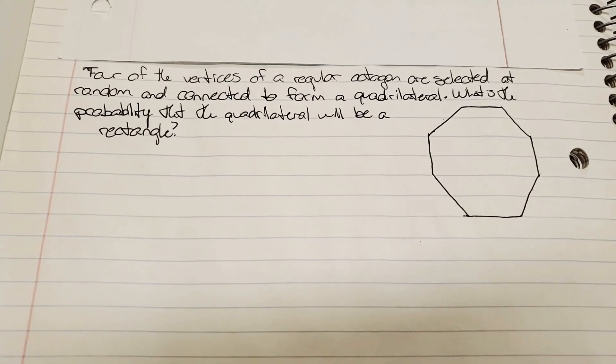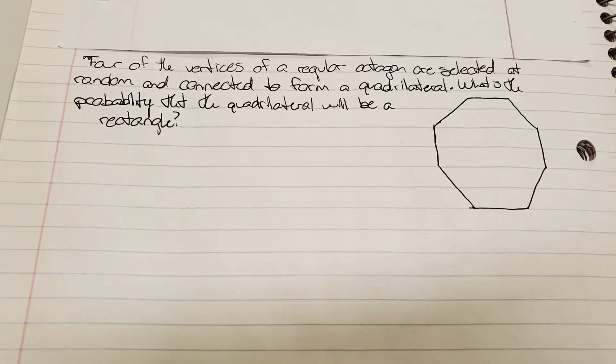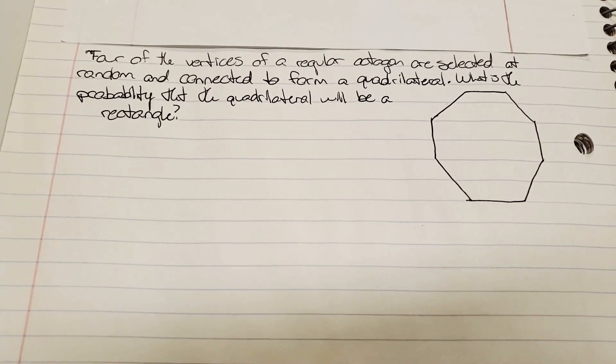Four of the vertices of a regular octagon are selected at random and connected to form a quadrilateral.